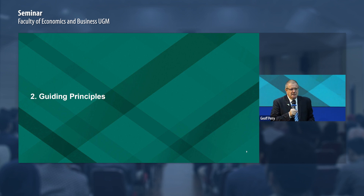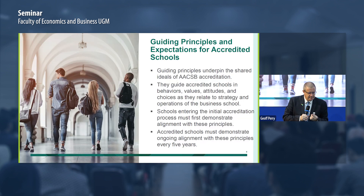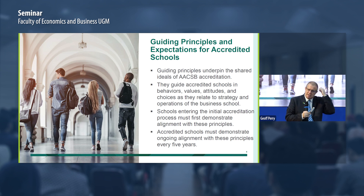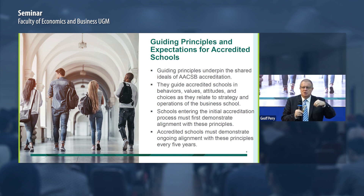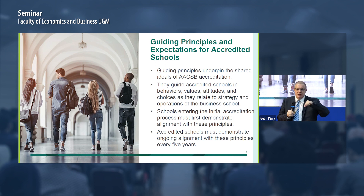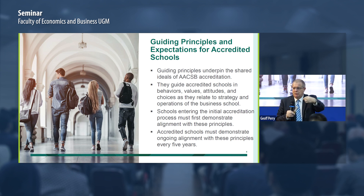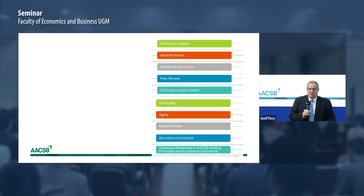In the standards, firstly we have something called guiding principles. These are the principles that underpin the accreditation — principles that accredited schools commit to. They cover the behaviours, values, attitudes, and choices that you make. When you enter initial accreditation, you do an eligibility application and talk about how you align with the guiding principles. Every time you go through a continuous improvement review, you have to explain how you still align with those principles. There are 10 guiding principles in total.